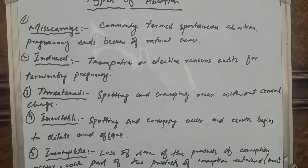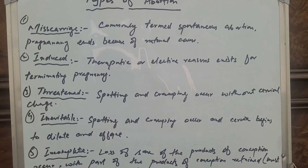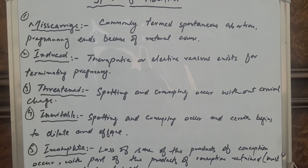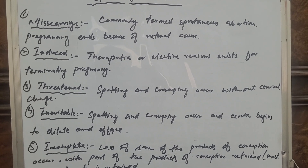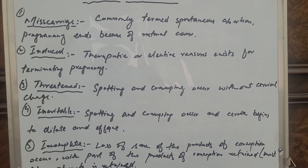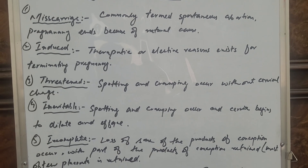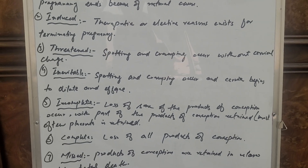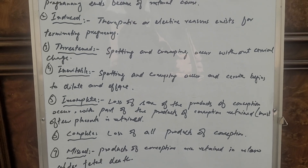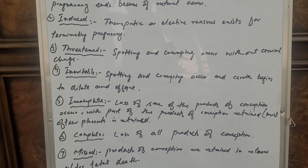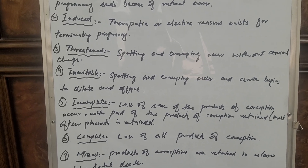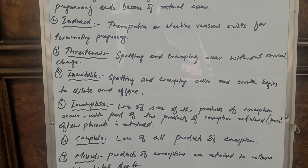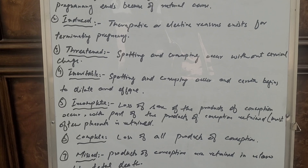Third, threatened abortion: spotting and cramping occur without any cervix change. Fourth, inevitable abortion: spotting and cramping occur and the cervix begins to dilate and efface. Fifth, incomplete abortion: loss of some of the products of conception occurs, with part of the products of conception retained — most often the placenta is retained.